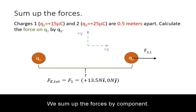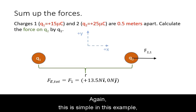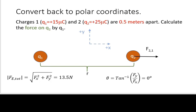We sum up the forces by component. Again, this is simple in this example, as there is only one force. We convert back to polar coordinates using the Pythagorean theorem and the inverse tangent function.